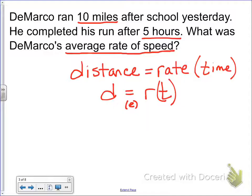So back to my problem, it says DeMarco ran 10 miles. Now, 10 miles sounds a lot like distance to me, so I'm going to write all my variables here, d, r, and t. And distance is 10 miles, that makes sense, because that would be the length of something. He completed his run after five hours. Five hours is time, because it takes five hours for him to do it. And what was DeMarco's average rate of speed? So that's the question, so we don't know what the rate is.